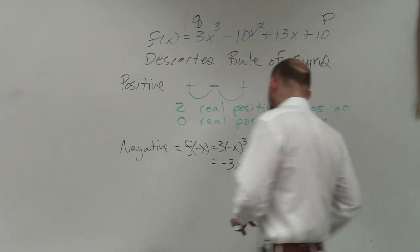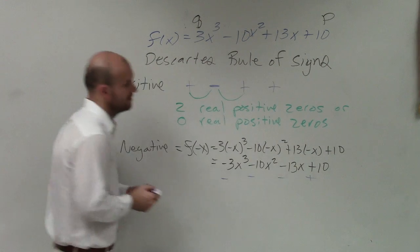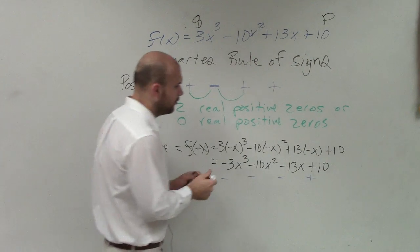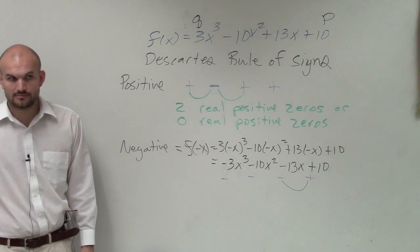Again, we drop down the signs: negative, negative, negative, positive. Therefore you can see that we only have one change in signs.